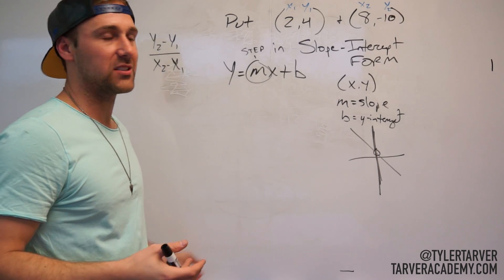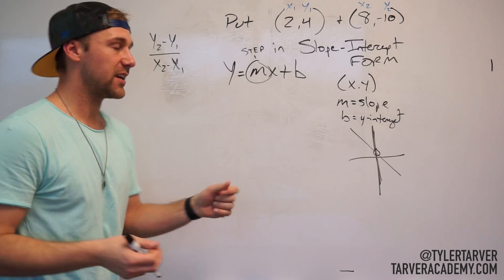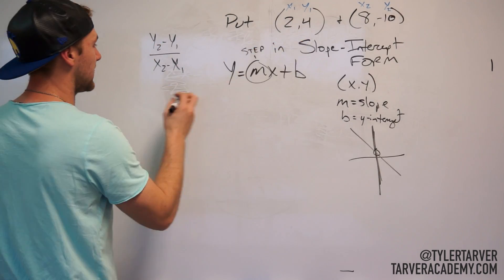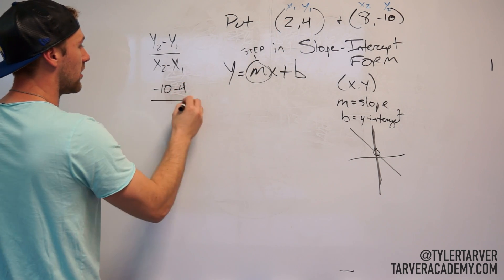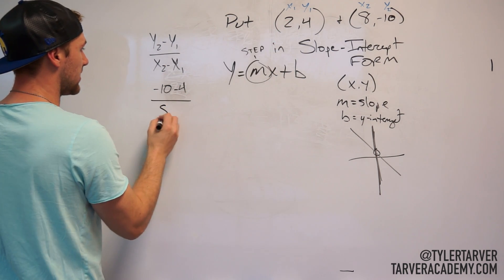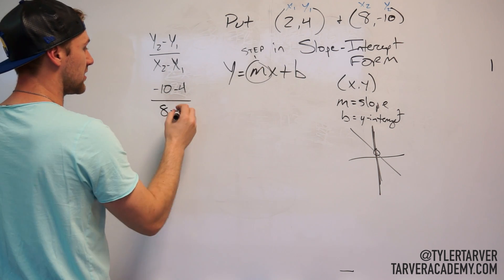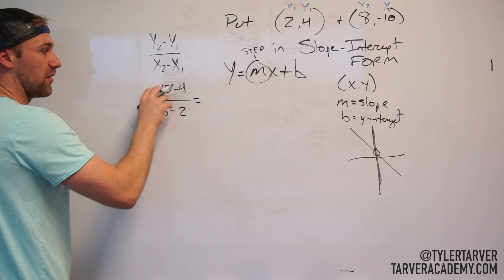Now that I've labeled that, I'm really just pulling these out and putting in what it's attached to. So our y2 I said is negative 10 minus our y1, which is 4. x2 is 8 minus sign and our x1 is 2. Okay, and then I just solve it.